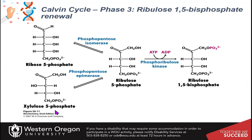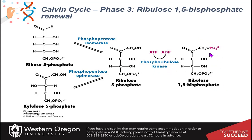The conversion of xylulose-5-phosphate to ribulose-5-phosphate uses an epimerase, since these two are epimers that only differ at one stereocenter position. The phosphopentoisomerase converts the aldose-ketose pair — ribose-5-phosphate to ribulose-5-phosphate — going from aldose to ketose. Then a kinase utilizes ATP to phosphorylate at the 1 position, giving ribulose-1,5-bisphosphate.